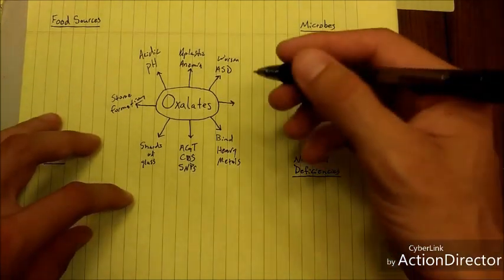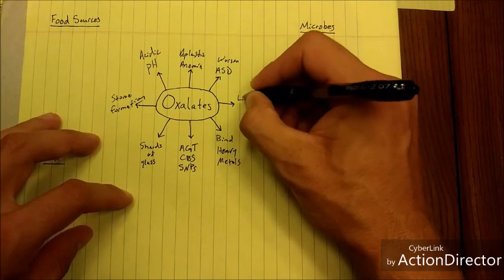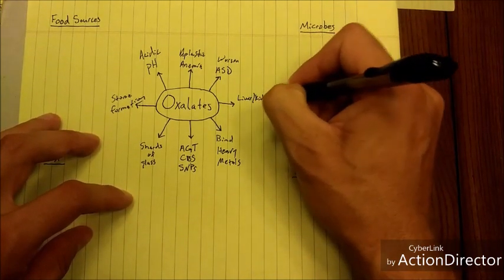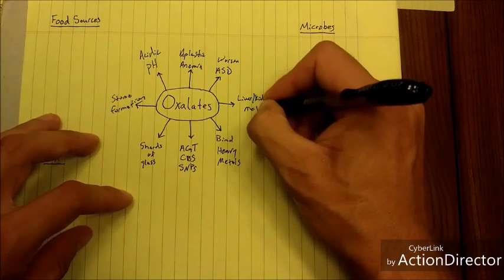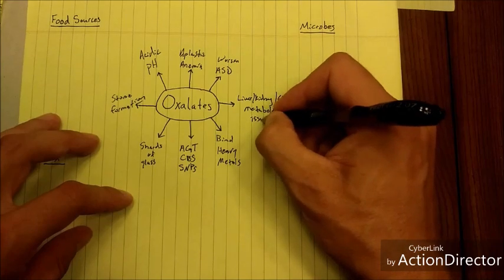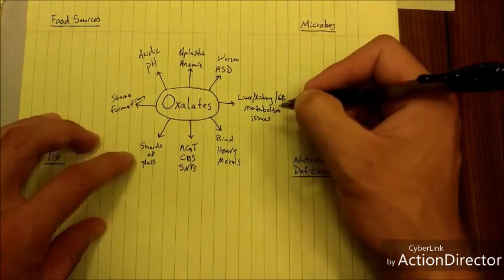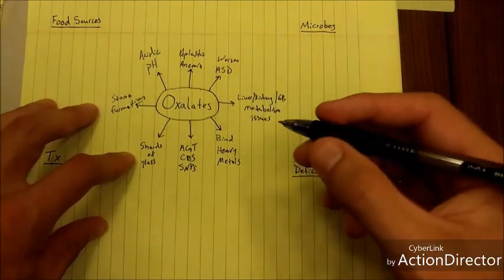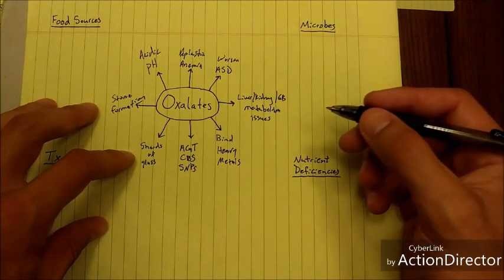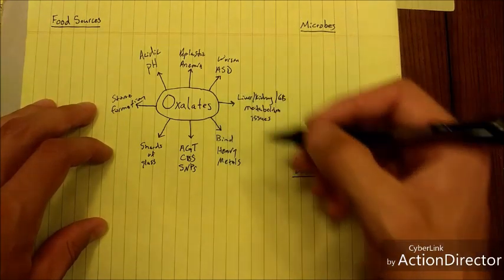Oxalates, if you have any issues with liver, kidney, or gallbladder metabolism, then that can lead to a buildup in oxalates. How? Well, if you're not properly clearing or metabolizing or getting rid of the oxalates, they build up in the body and can have the results we've discussed already.